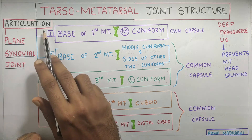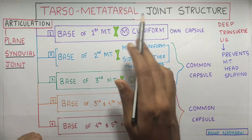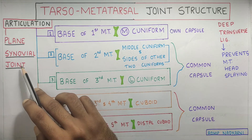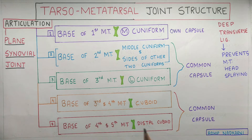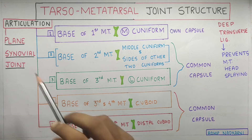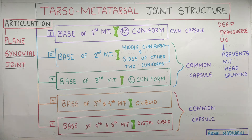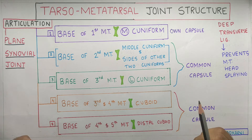The articulation that occurs in the tarsometatarsal joint is a plain synovial joint, which means the joint has a capsule around it with synovial fluid, and the predominant motion that occurs in this joint is a gliding motion.